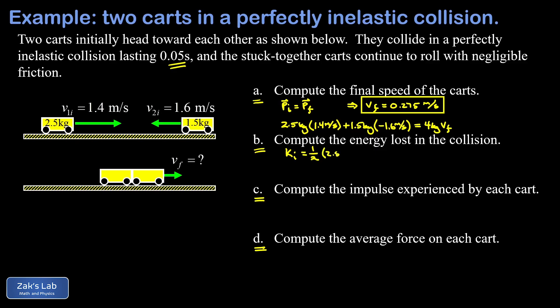In our initial state, we have one half times mv squared for the 2.5 kilogram car, so there's m 2.5 and v was 1.4, and we add that to the kinetic energy of the second car: one half times 1.5 and then it had a speed of 1.6, so 1.6 squared. This gives us a total energy of 4.37 joules.